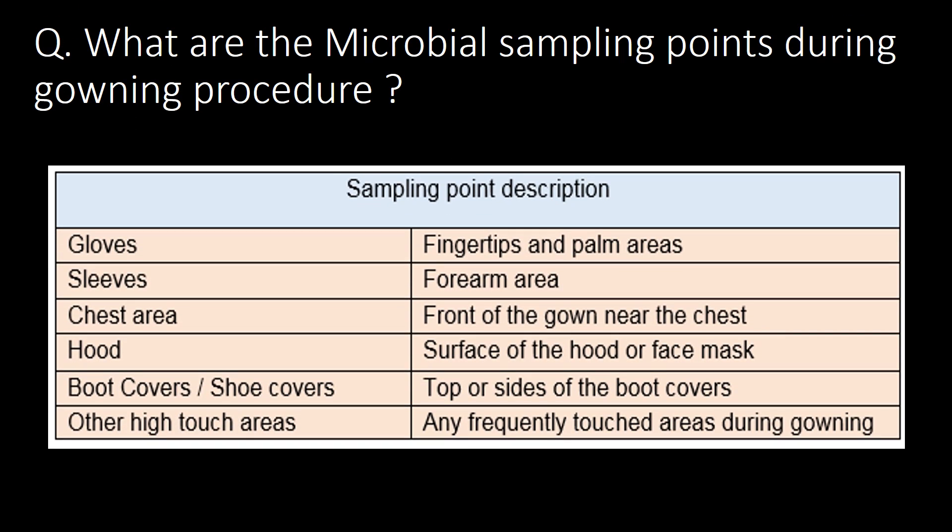What are the microbial sampling points during gowning qualification? The following are the 6 important microbial sampling points during gowning qualification: gloves, sleeves, chest area, hood, boot covers or shoe covers, and other high-touch areas.